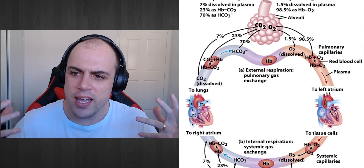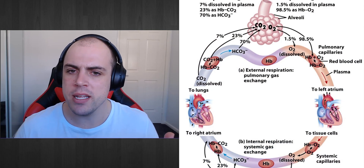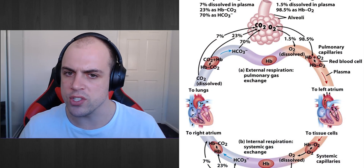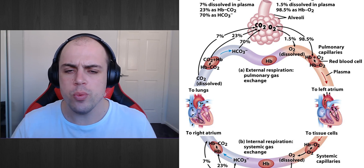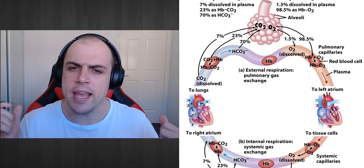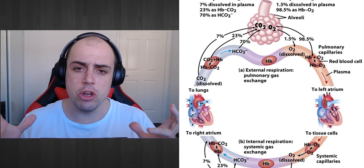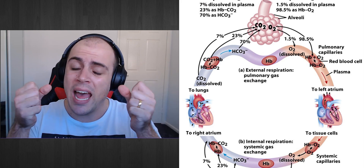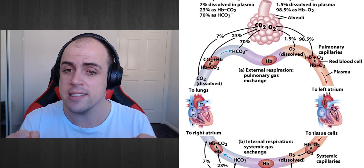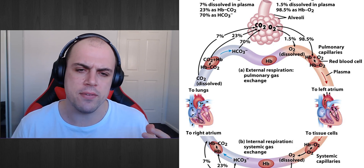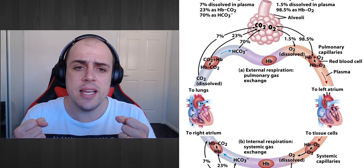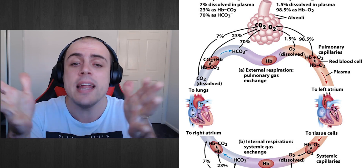Hello everyone and welcome back to our exploration on how we deliver oxygen around the body. In our last video we ended things on a bit of a cliffhanger: how is it that hemoglobin is able to transport oxygen? So here's the thing — do we want hemoglobin to have a high binding affinity, meaning it can bind and hold on to oxygen very easily, or do we want it to have a low binding affinity, meaning it's very easy for hemoglobin to let go of oxygen?